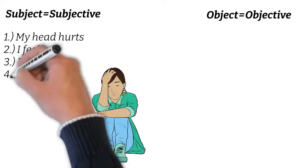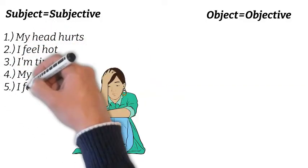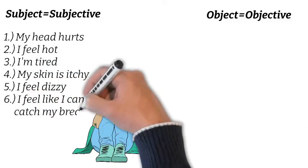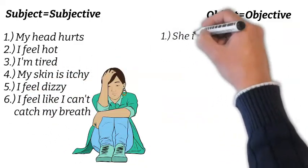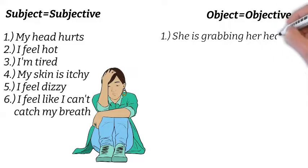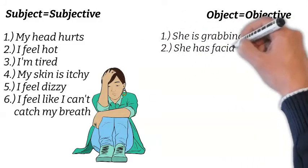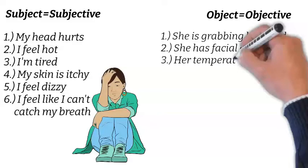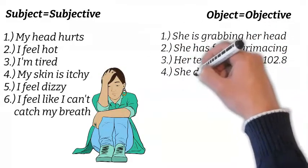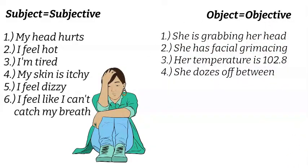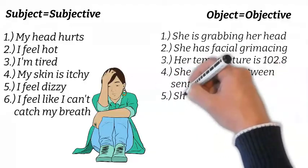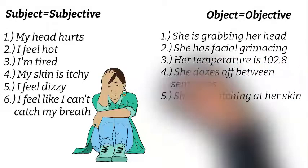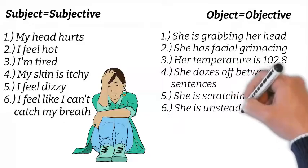On the other hand, objective data can be observed. Objective data is, by definition, observable and measurable — there is no way to dispute the facts. In fact, if you had another nurse come into the patient's room and perform an objective assessment, it would be exactly the same as yours, because we're looking at facts with no room for interpretation.